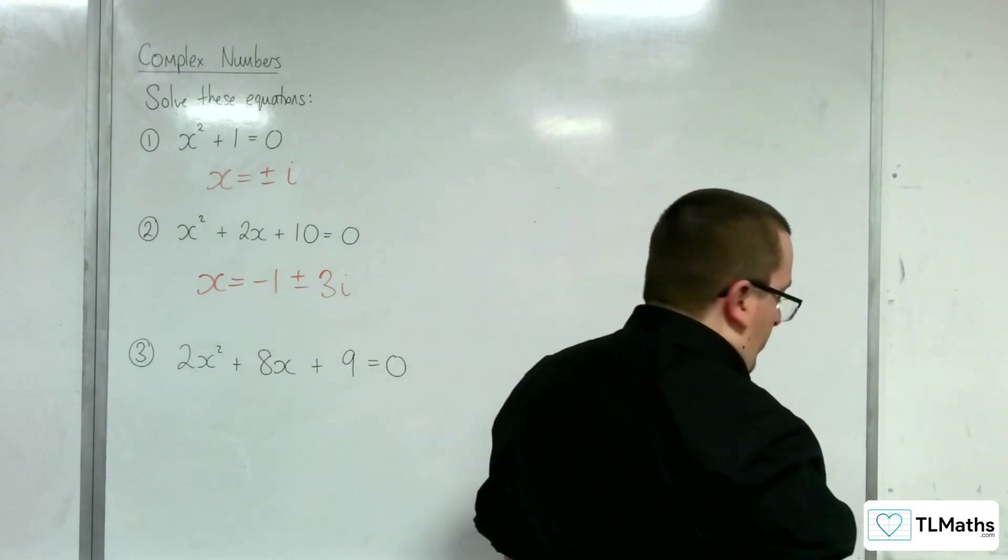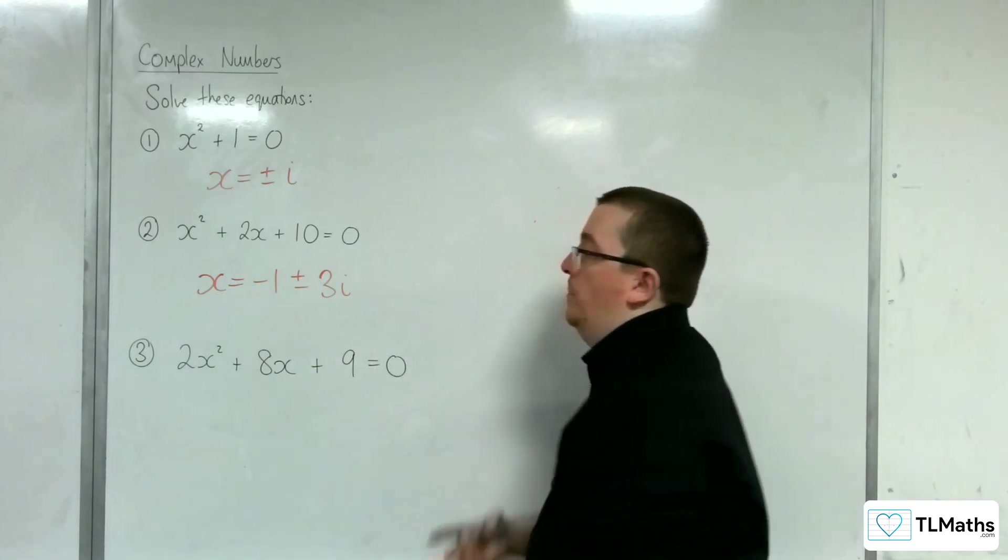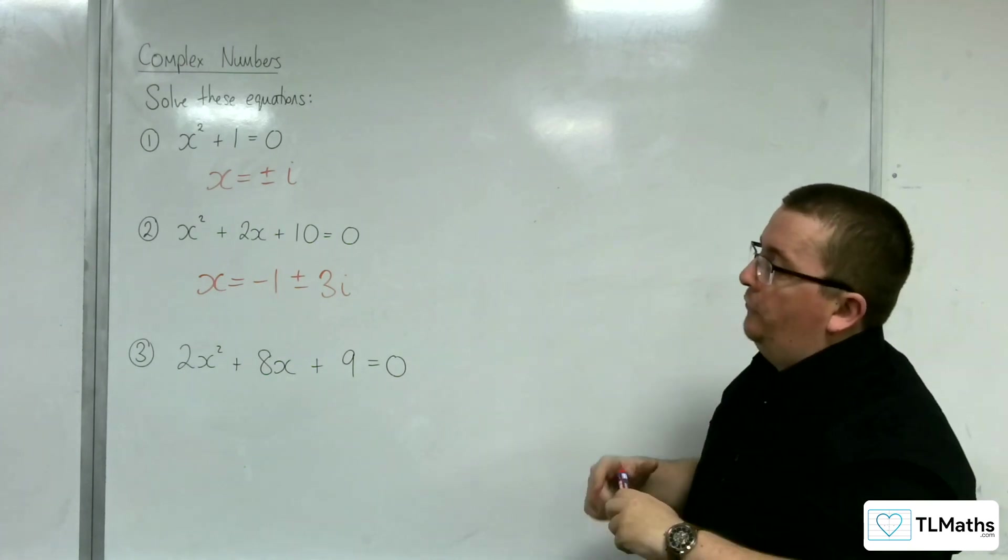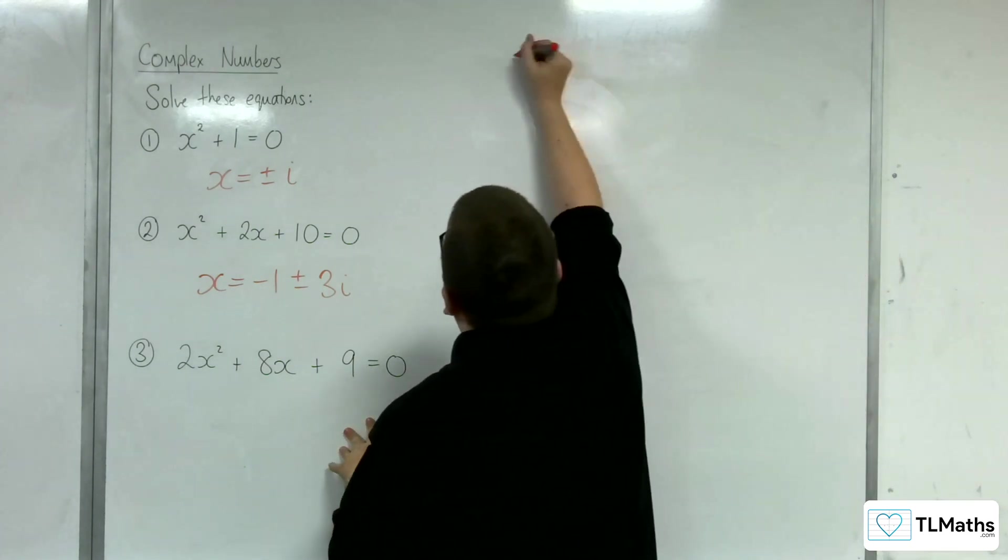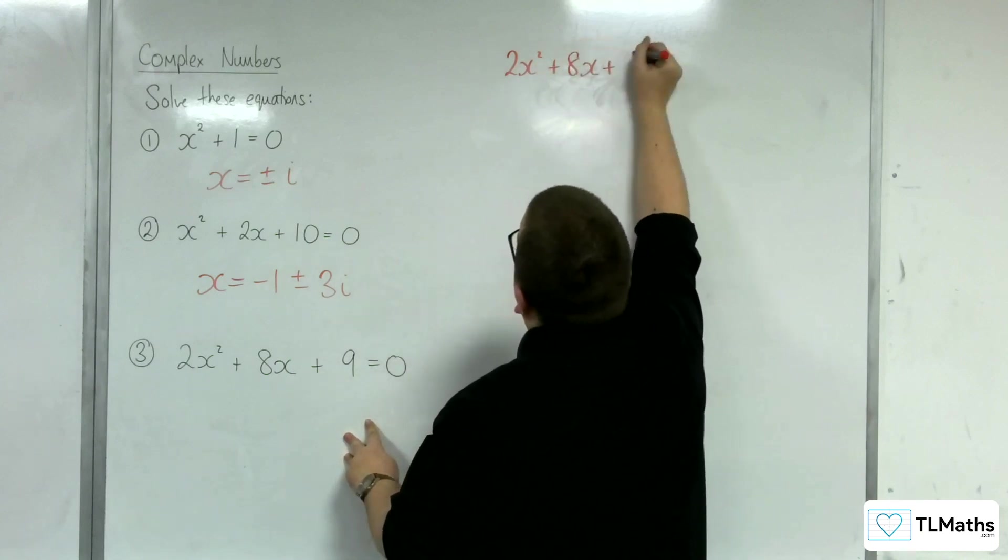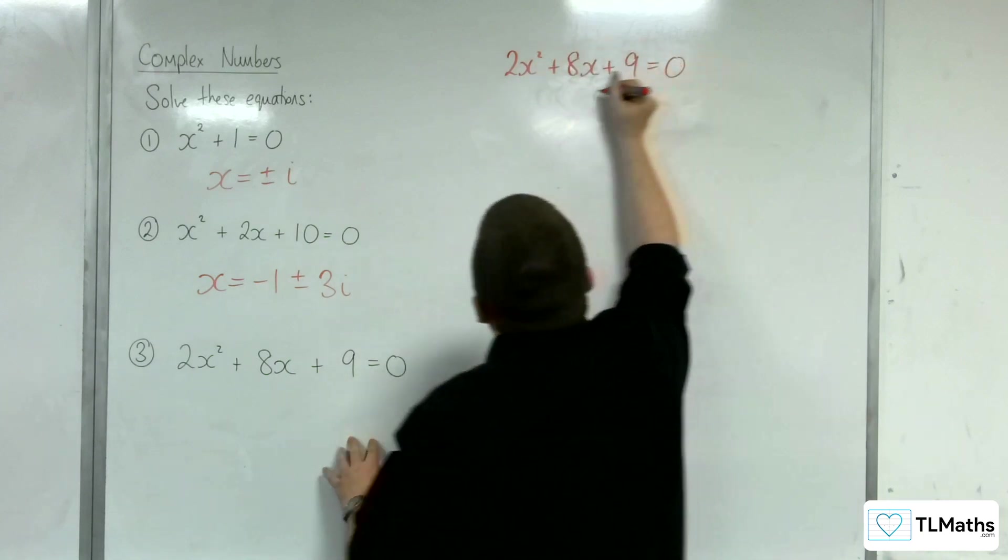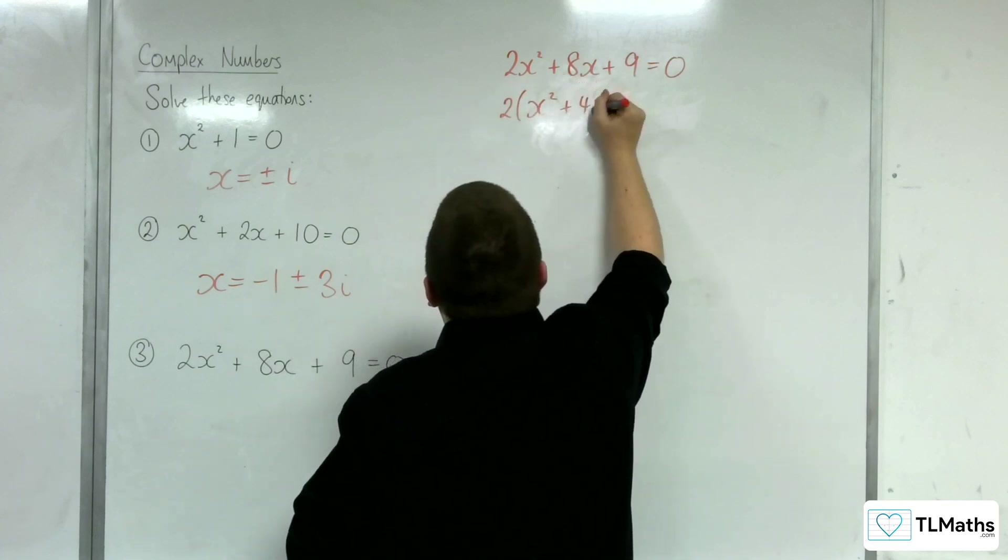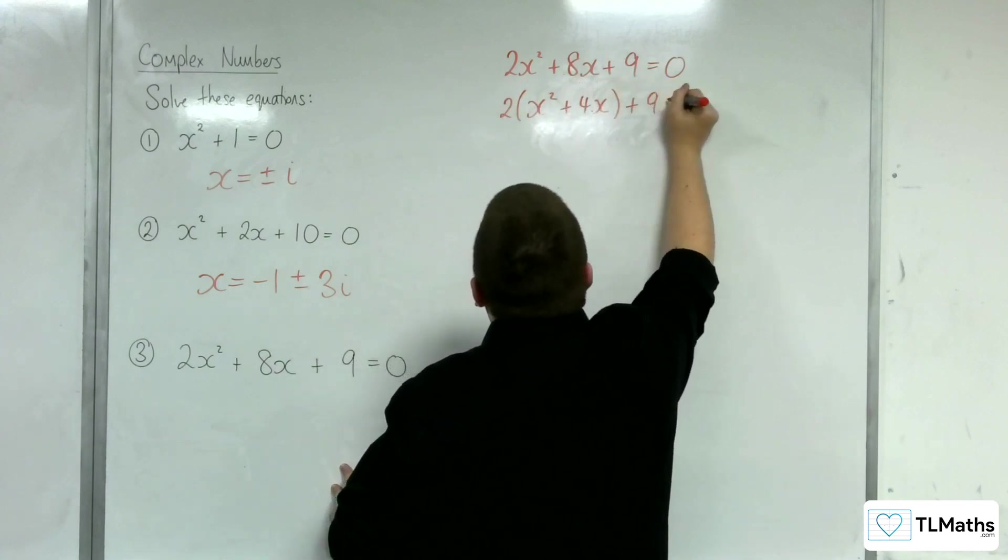Right. Let's have a look at number 3 then. So, now that we've got this completing square idea down, let's go with that method for number 3. So, we've got 2x squared plus 8x plus 9 is 0. So, I'm going to factor the 2 out of the first two terms. So, x squared plus 4x plus 9 equals 0.